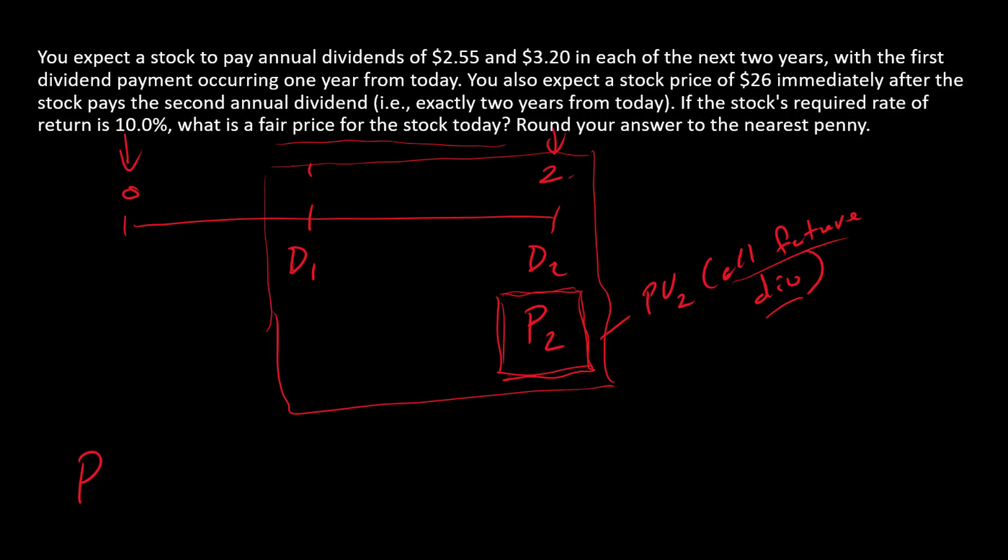All right, so our price or present value is simply the present value of this series here. D1 we're given as 2.55, and since that is a time one cash flow, we're going to discount it by one period, so we've got an exponent of one. And then in year two, we've got two cash flows.